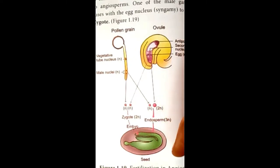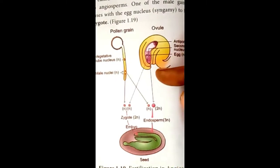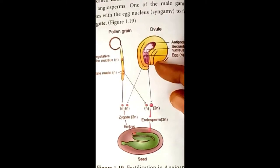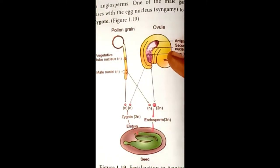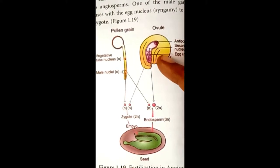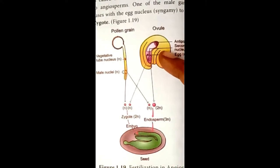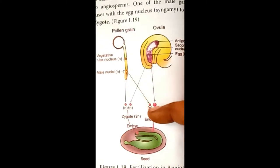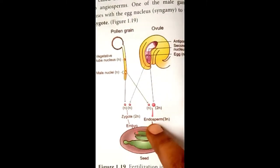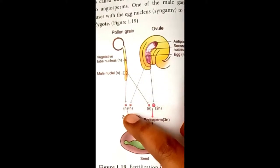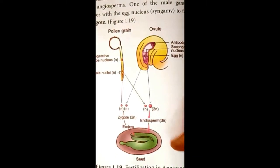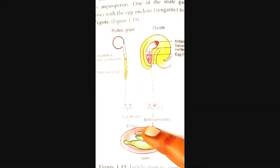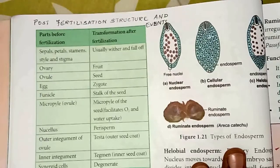The other male nucleus fuses with the polar bodies (2n polar nuclei) to form the secondary nucleus, which is also called triple fusion. This second gamete migrates to the center and fuses with the polar nuclei forming the primary endosperm nucleus (3n). The first nucleus fuses with the egg to form the zygote (2n), which develops into the embryo. The endosperm forms the nutritive tissue for the growing embryo.